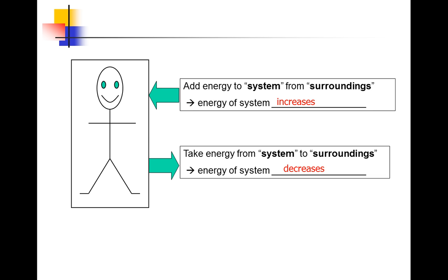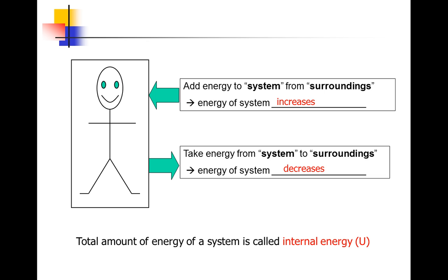The total amount of energy that a system has is called the internal energy. We will never know the true internal energy of a system — it's just too complicated, too many different types of energy: electrical energy, nuclear energy, and so on. So we'll never know the total amount of energy, but what we're interested in in thermodynamics is the change. What we will be able to work out is the change in internal energy.